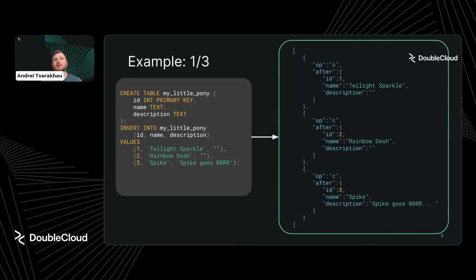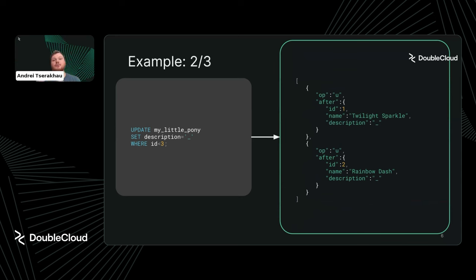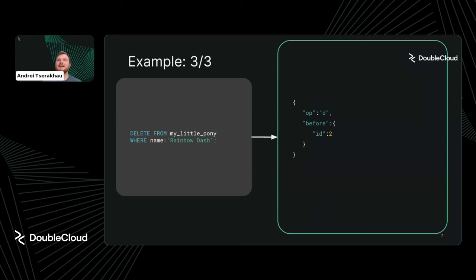Instead of plain SQL, we have a formatted and structured response. There's an important field here: 'op', the operation, which says 'c' for create. We create three entities and have an 'after' value showing what we have after the change — Rainbow number one, two, and three. For updates it's similar but trickier — updating multiple rows via a predicate generates multiple events in Kafka. For delete, the operation is 'd' and we don't have an 'after' value, only a 'before' value.